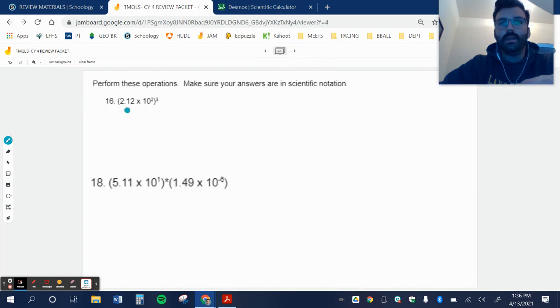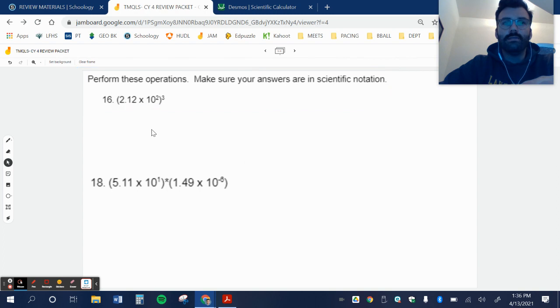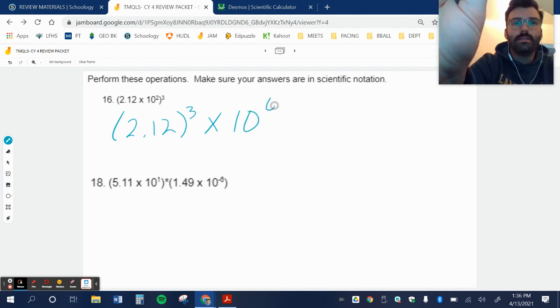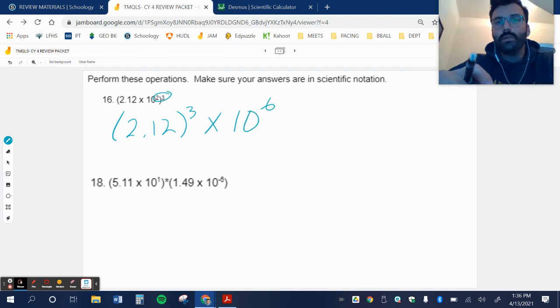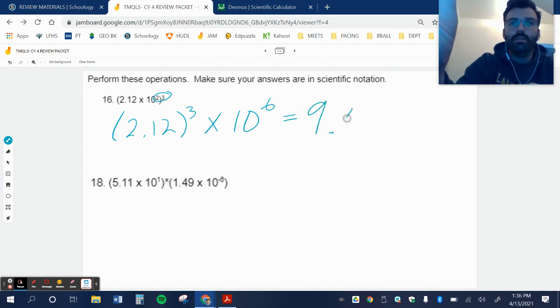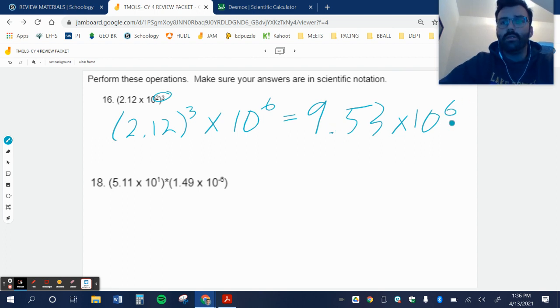All right, let's keep going. This is more exponent stuff, but I'm going to do it anyway. Perform these operations, make sure your answers are in scientific notation. This is a power, exponent power. So I want to do 2.12 to the third power times 10 to the sixth. I want to treat these two things separately. 2.12 to the third is 9.53, so I'll write that as 9.53 times 10 to the sixth. And since I didn't have to move my decimal point at all, I don't need to change my exponent.